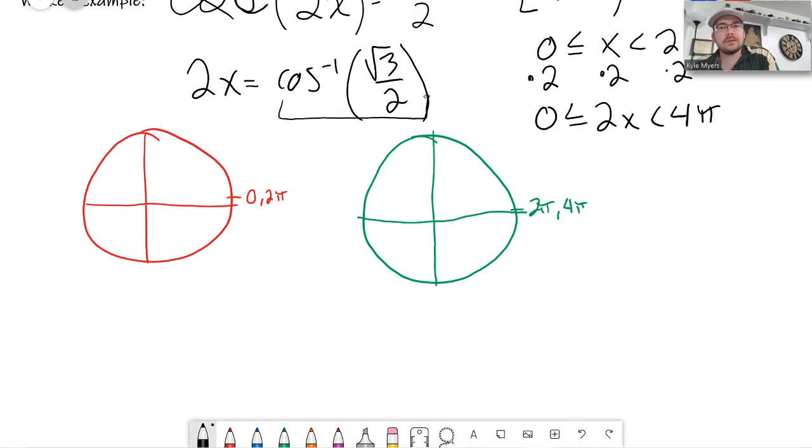So this is π over 6, but that's just one of the answers. π over 6 is one of the answers, and it's the reference angle. This is π over 6, and it's a reference angle of π over 6. I want to know where the other place is on my red circle here where cosine is positive.